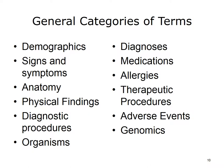It is useful to assign data elements to classes or categories. Most systems would use categories similar to these: demographics, signs and symptoms, anatomy, physical findings, diagnostic procedures, organisms, diagnoses, medications, allergies, therapeutic procedures, adverse events, and genomics. In some cases, a coding system will only include terms in some of these categories. If we depend on just one coding system, we have data items we cannot code. Of course, everything we record does not fit into these categories — then what do we do?